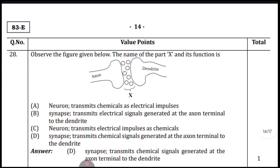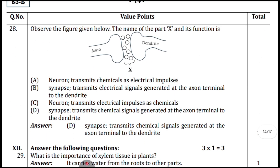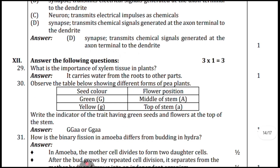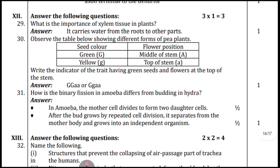Question twenty-nine: observe the figure given below — name the part X and its function. Answer D is correct: synapse; the synapse transmits chemical signals generated at the axon terminal to the dendrite. One-mark questions: what is the importance of xylem tissue in plants? It carries water from the roots to other parts.